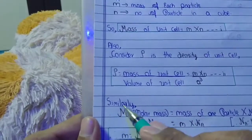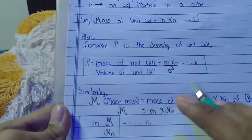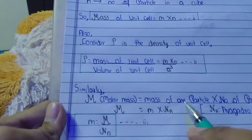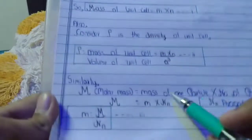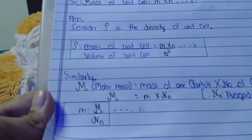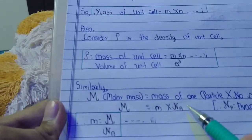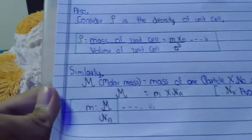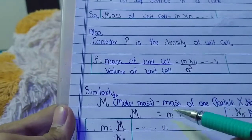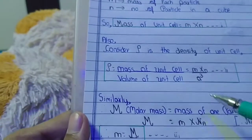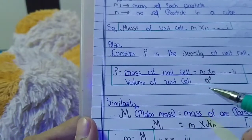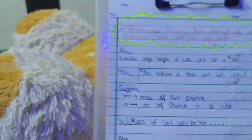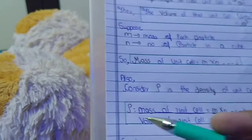From the standard formula, molar mass M equals the mass of one individual particle (small m) multiplied by Avogadro's number Nₐ, which is 6.022 × 10²³. Therefore, the mass of an individual particle m equals molar mass M divided by Avogadro's number Nₐ.